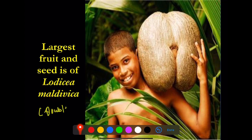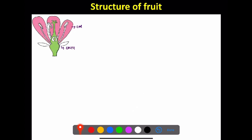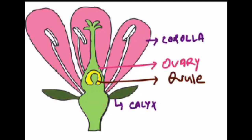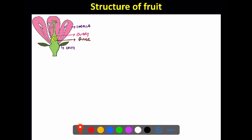The common name of Lodoicea maldivica is the double coconut. For the structure of fruit, we will make a simple diagram of a flower. In this flower, the thalamus is the base. The outer whorl is the calyx, then the corolla. The male reproductive part of the flower is the androecium, and the female reproductive part is the gynoecium. The gynoecium is made up of unit structures called carpels. The pollen grain receiving part is the stigma, the style connects it, and the fertile part of the carpel is the ovary, which contains the female gametophyte and ovule.